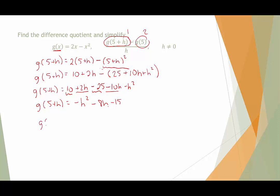Let's move on to g(5). This will be a little bit less work, so that's nice. That's going to be 2 times 5 minus 5 squared. And that would be 10 minus 25, which is negative 15.